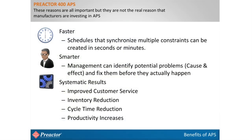There are many proven benefits from using advanced planning and scheduling tools. First, the tool allows planners to make faster decisions. Second, planners can be smarter — they can see problems before they hurt and take action in advance, like having a crystal ball for the shop floor. The results, as proven by scores of users, are dramatic: a 90% improvement in on-time delivery performance, a 50% reduction in on-hand inventory and work in progress, and a 25% increase in efficiency and capacity available for the same resources.